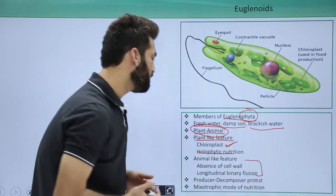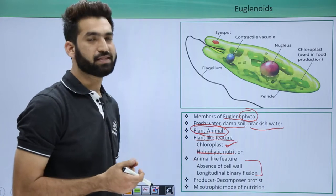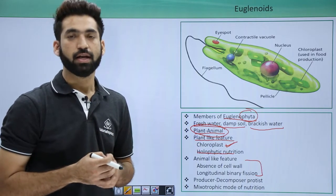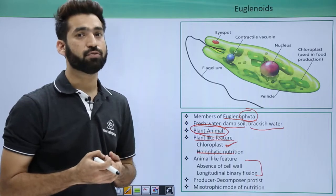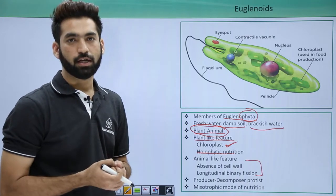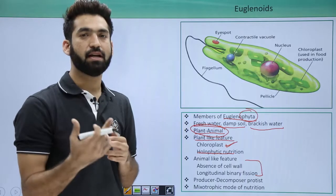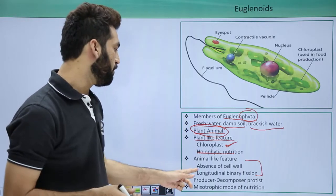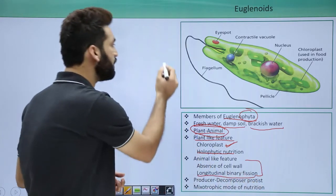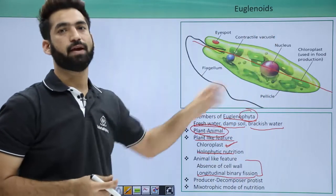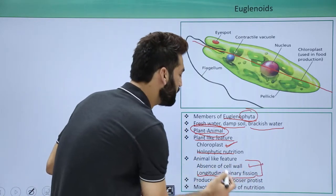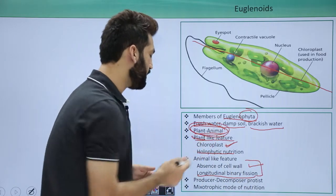Their animal-like features include the absence of a cell wall. In dinoflagellates the cell wall was made of cellulose and pectin, and in diatoms it was made of cellulose and silica, but in euglena members there is no cell wall — the outer layer is just the cell membrane. They also divide by longitudinal binary fission, which is an animal-like feature.